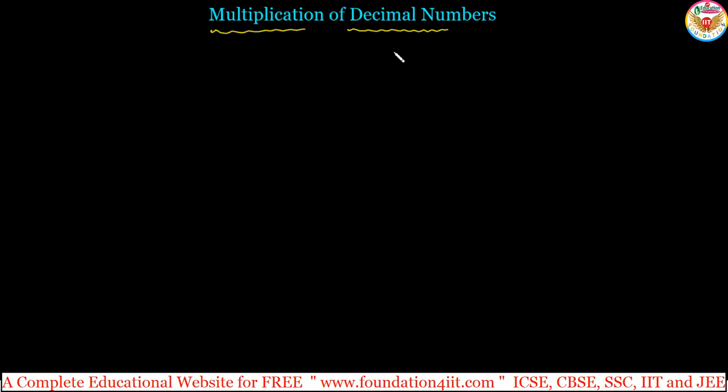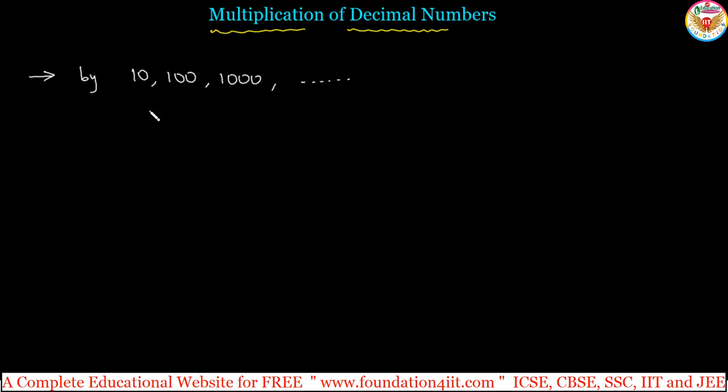Multiplication of decimal numbers. When you see multiplication of decimal numbers, we have total three types, three categories. One is multiplication by 10, 100, 1000, and so on — how to multiply any decimal number by powers of 10.